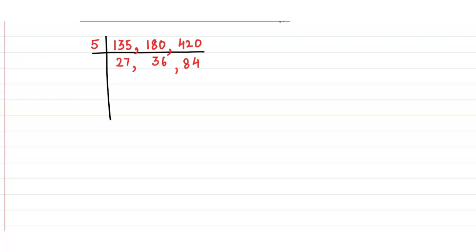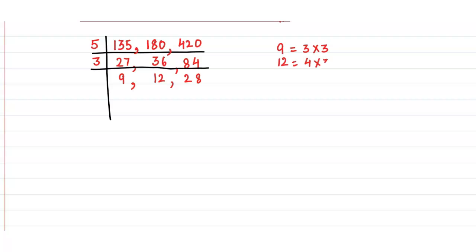Next, we can see that these 3 numbers are divisible by 3. So we take out 3 and we have 9, 12, and 28. Now taking these numbers one by one: 9 equals 3 times 3, 12 equals 4 times 3, and 28 equals 7 times 4. So these 3 numbers have only 1 as the common factor, and we stop here.